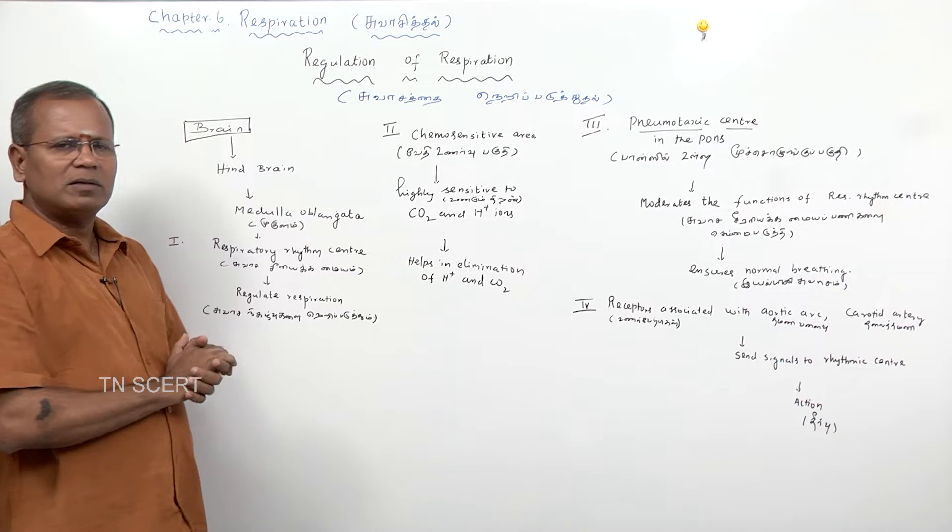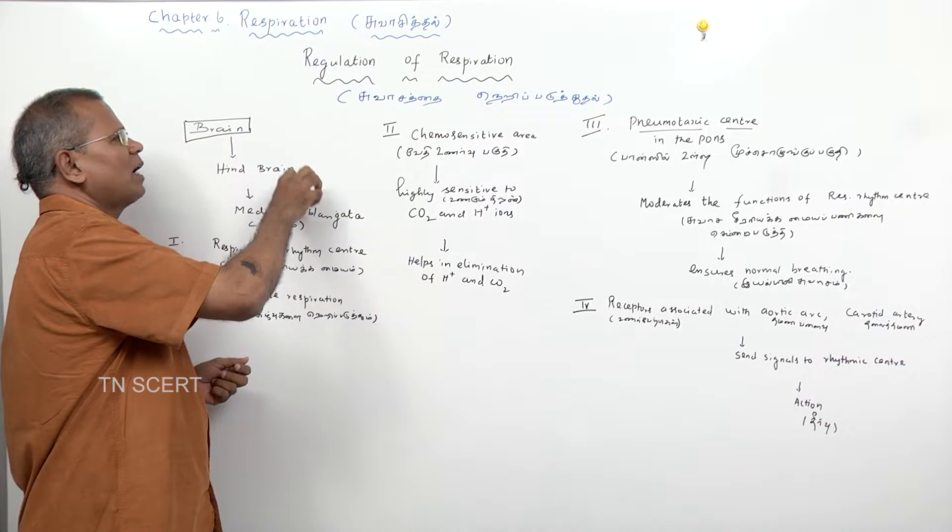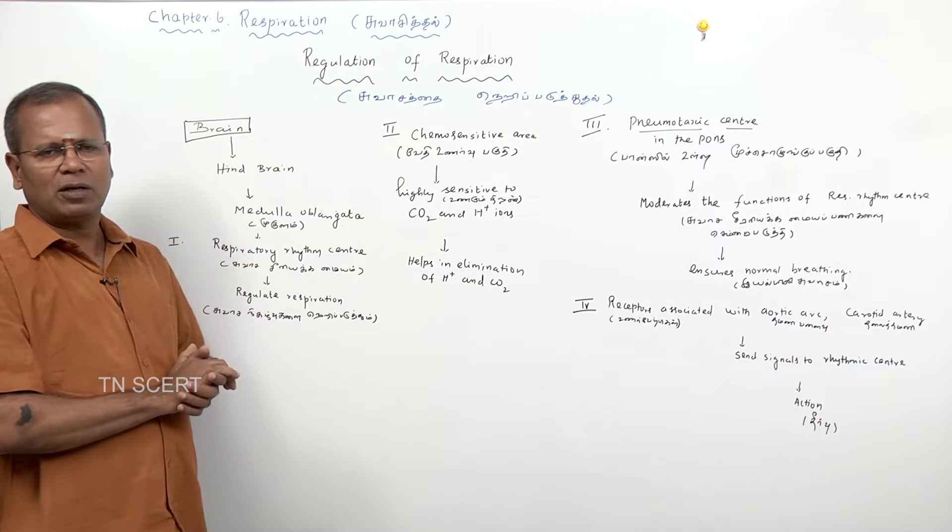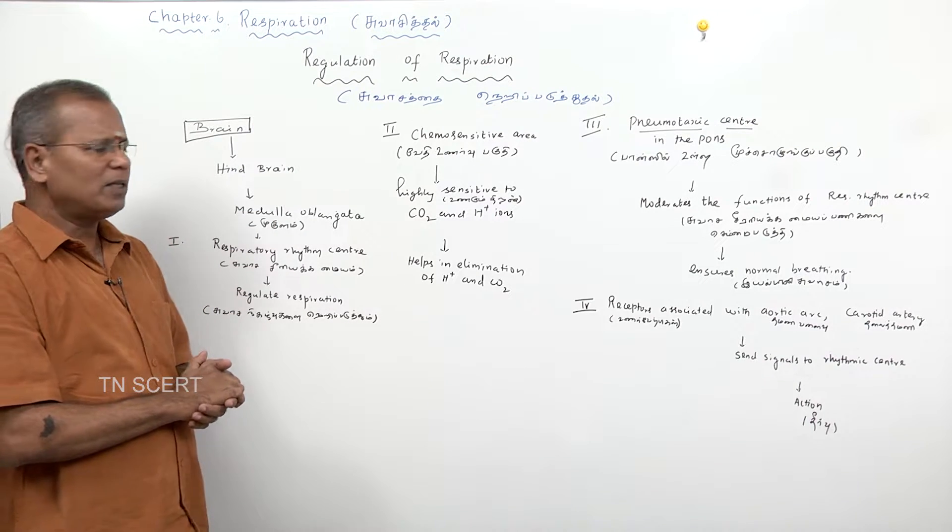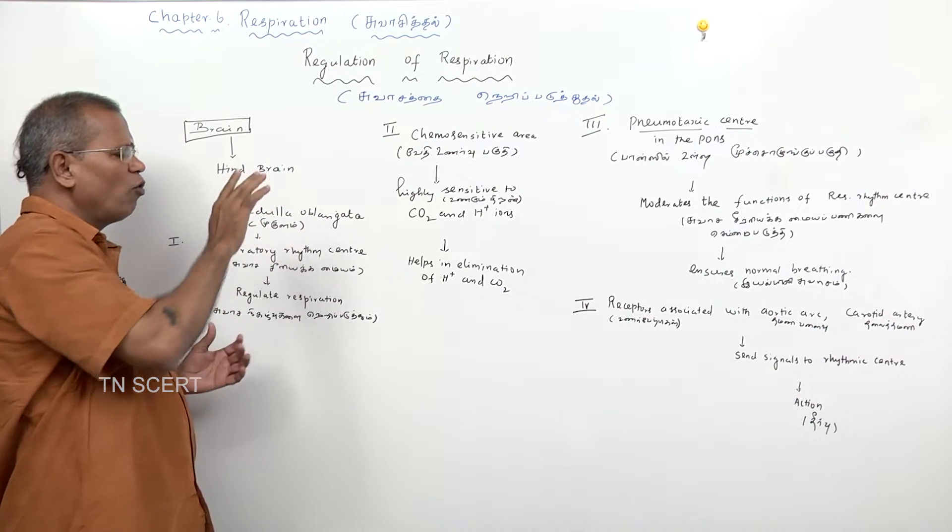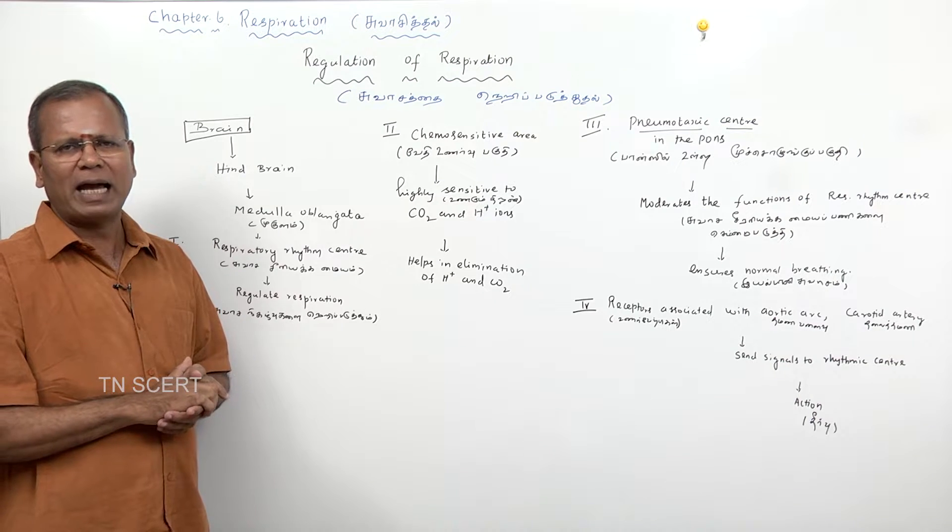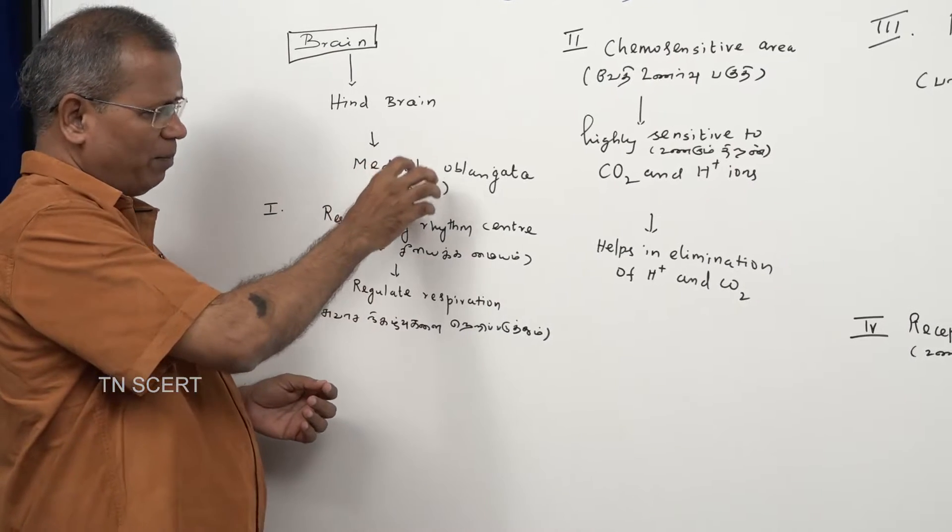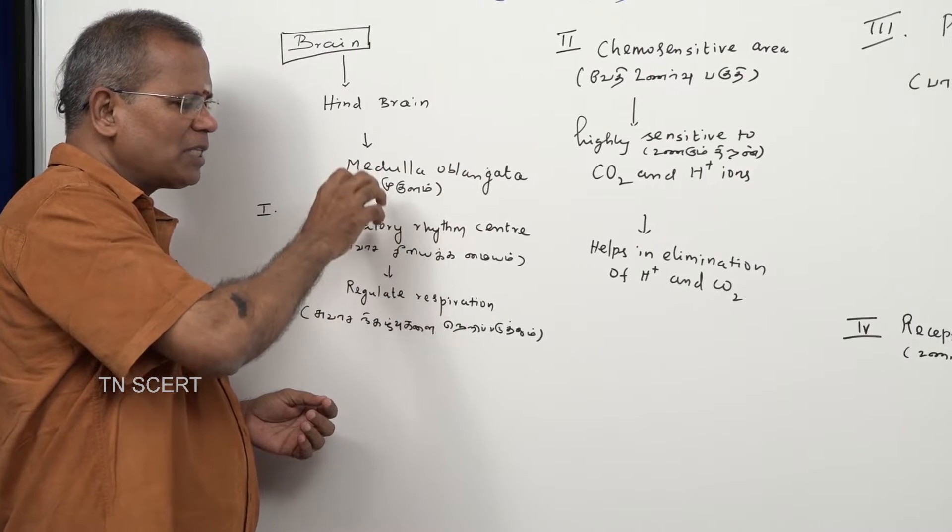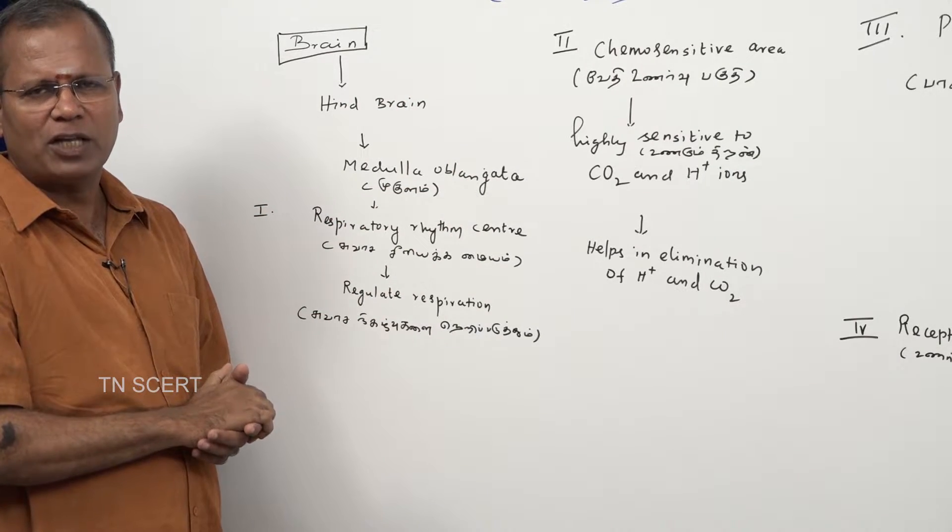The medulla oblongata present in the hindbrain controls the respiration. The hindbrain contains the medulla oblongata. That is why the medulla oblongata is a respiratory rhythm center.